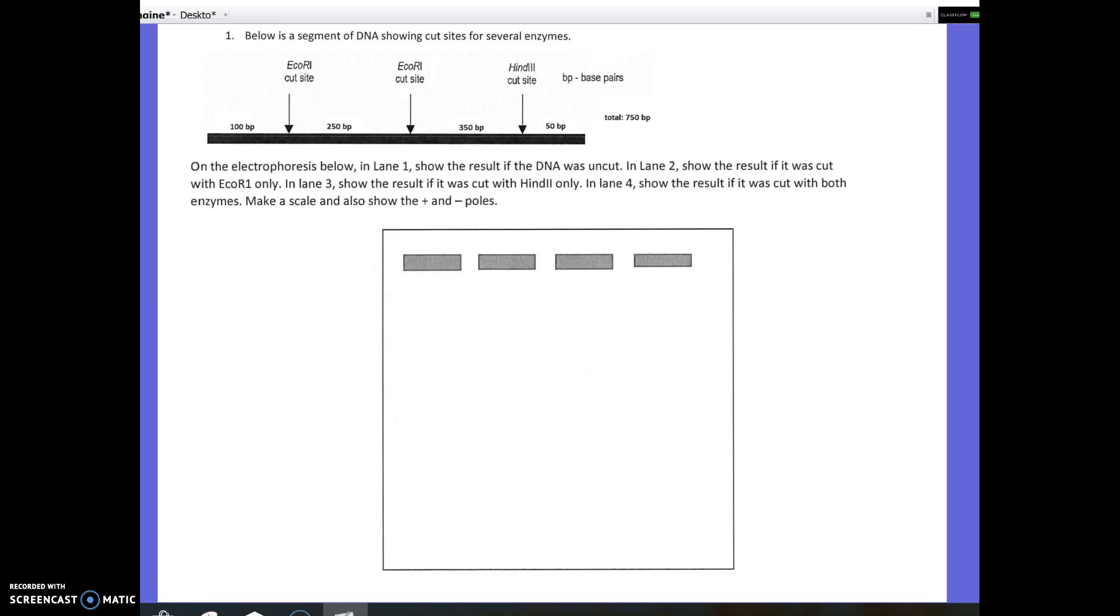So the first thing that you're going to be asked to do is you're going to be asked to cut a DNA segment, and then draw in the bands that you would see on our electrophoresis after the different cuts were made. So at the top, we have our DNA segment. It is a total of 750 base pairs long. The first thing it asks you to do is to show the positive and negative poles, and that's going to be a point. Negative needs to be at the top, positive needs to be at the bottom, because remember, DNA is negative, and it's going to travel towards the positive end.